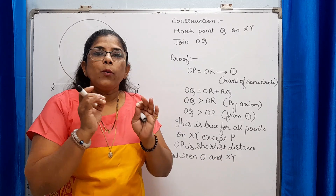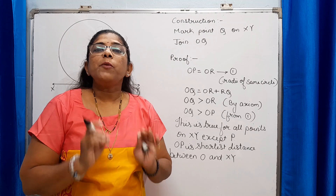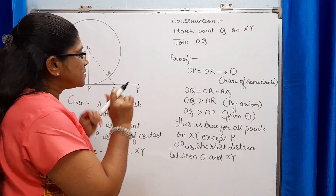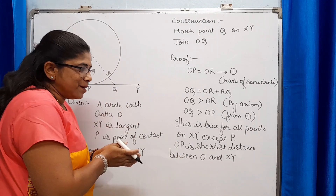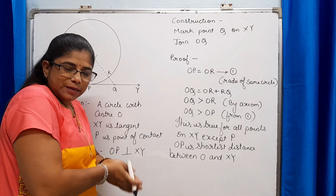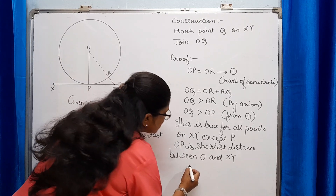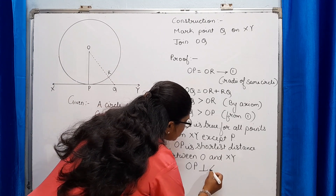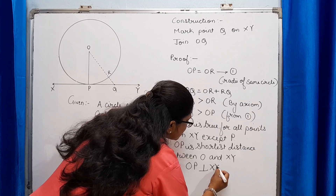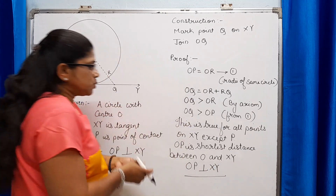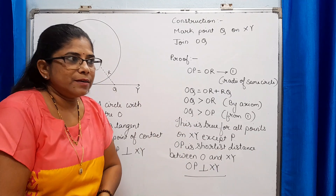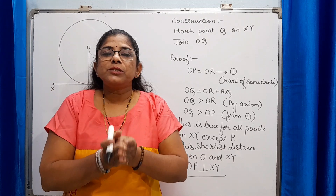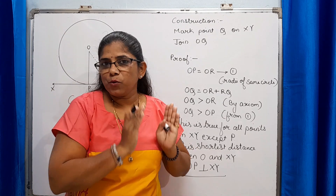We know that perpendicular distance is the shortest distance. So if OP is the shortest distance between O and XY, then OP is perpendicular to XY. Hence, the radius is always perpendicular to the tangent at the point of contact.